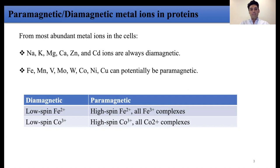The first step is to determine which metal ions are paramagnetic and which are diamagnetic. The problem is that metal ions cannot simply be divided into diamagnetic and paramagnetic classes, as the magnetic properties depend on oxidation state, coordination sphere, and spin states. For example, among the most abundant metal ions found in cells used as protein cofactors under biological conditions, sodium, potassium, magnesium, calcium, zinc, and cadmium ions are always diamagnetic.